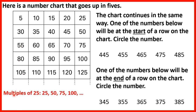Now we know multiples of 25: we have 25, 50, 75, 100, 125, 150 and so on. And what we need to spot is that numbers at the start of a row are always 5 more than a multiple of 25.